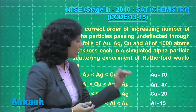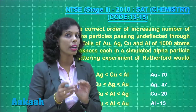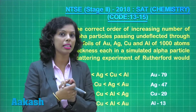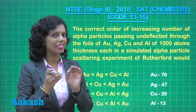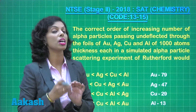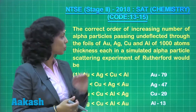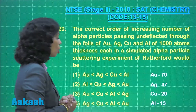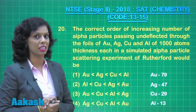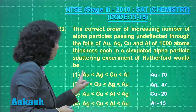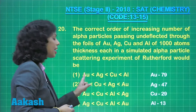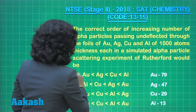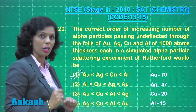Aluminum has the least atomic number. Since fewer undeflected particles correspond to higher Z, a lesser value of Z means more alpha particles will pass undeflected. Comparing the options, the first option correctly represents the situation: gold has the least undeflected particles while aluminum has the maximum. The correct answer is option number 1.